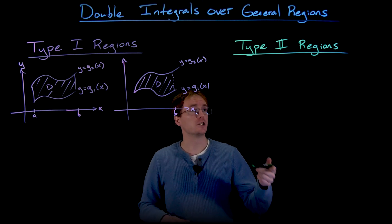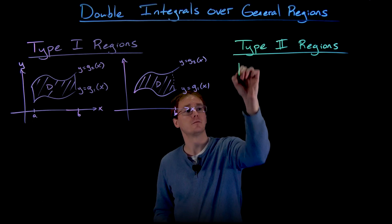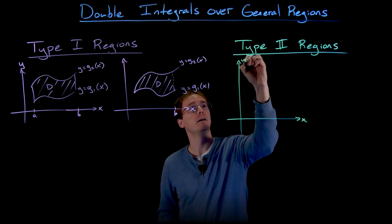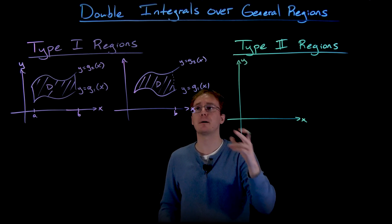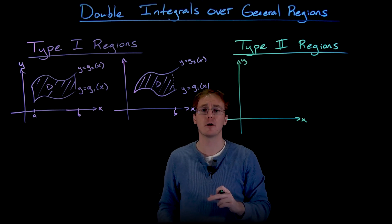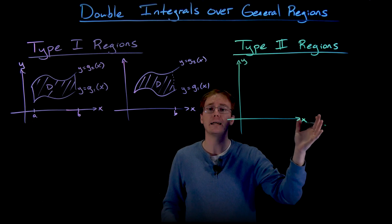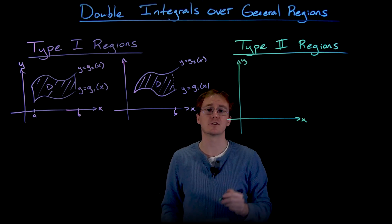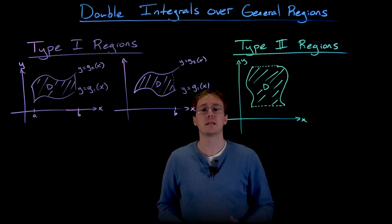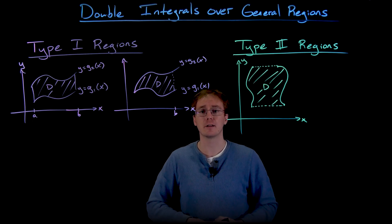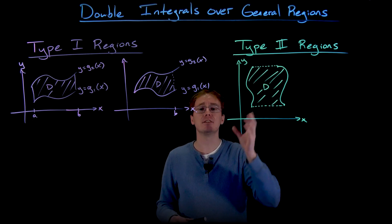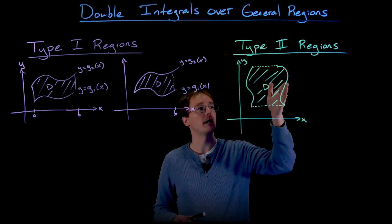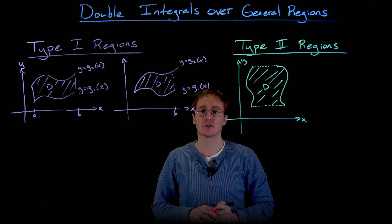The other type of region we're interested in is a type 2 region. These regions still live in the x-y plane, but instead of being bounded by curves on top and bottom, they're bounded by curves on the right and curves on the left. It will be easiest to describe the region using a rightmost curve and a leftmost curve.